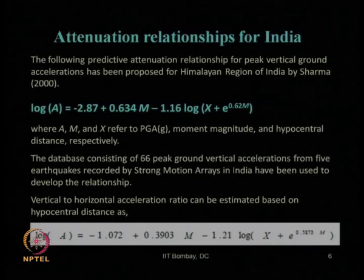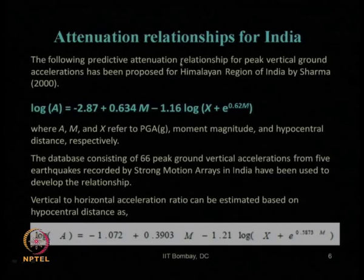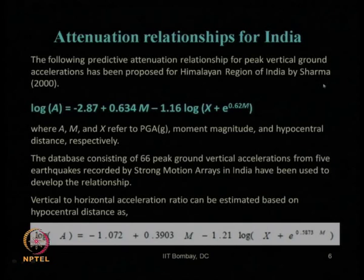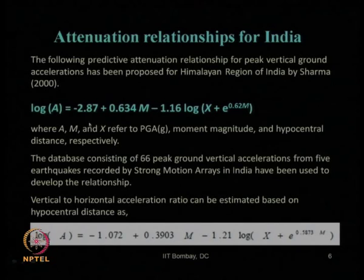We also saw the work done by Sharma in 2000, where he proposed the attenuation relationship for peak vertical ground acceleration for the Himalayan region — and earlier he had also worked on horizontal PGA. Professor M.L. Sharma is at IIT Roorkee in the earthquake engineering department. In his equation, A is the PGA vertical component, M is moment magnitude, and X is the hypocentral distance in kilometers.